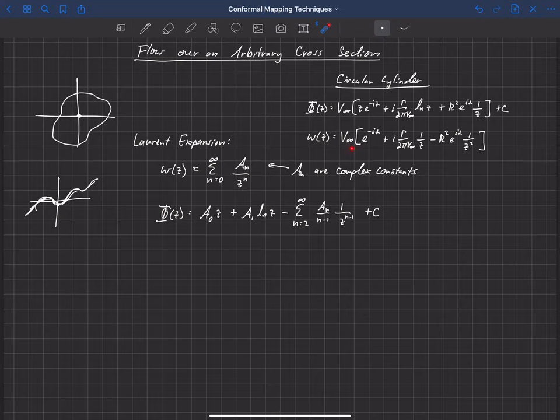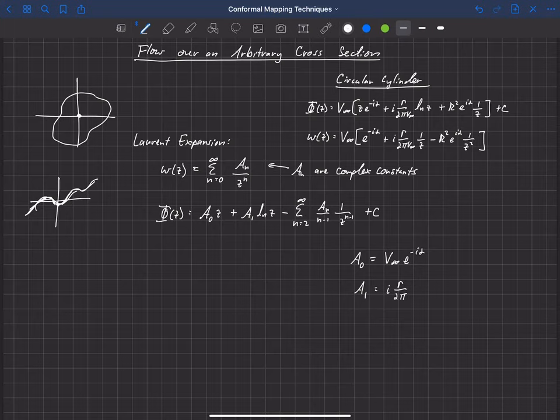a_0 for the circular cylinder, if we just look at that first term here, or if we're looking at phi, then we're looking at this right here. And it's some constant times z. So for that, we get V infinity e to the minus i alpha. The first term, a sub 1, is everything times the natural log here in this equation, which is i times gamma over 2π. The V infinity actually cancels with the V infinity out front.